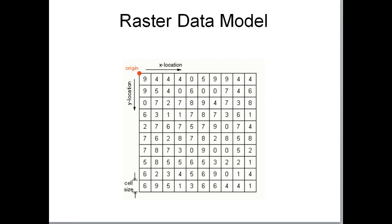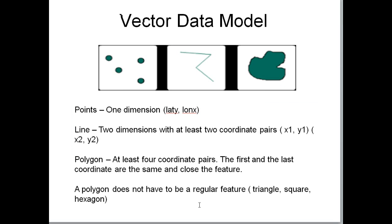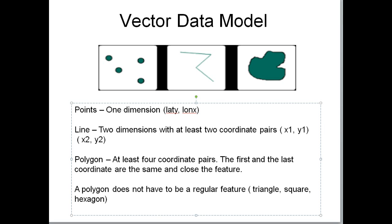A polygon has at least four coordinate pairs — the beginning coordinate pair and the last coordinate are the same, closing the shape. If I had a triangle, it has three vertices but needs four coordinate pairs to indicate that it closed. A misconception among new GIS users is that they think of a polygon as a regular shape like a triangle, square, or hexagon, but a polygon just means a closed feature with at least four coordinates. This irregular shape is a perfectly valid polygon.